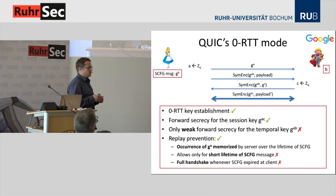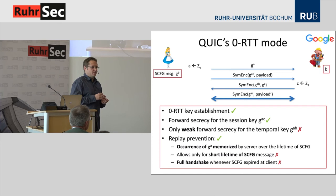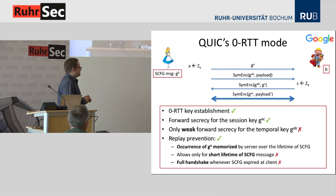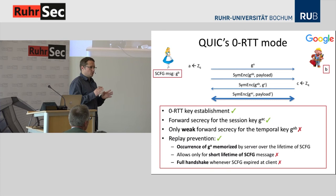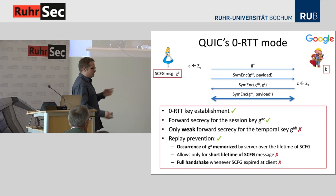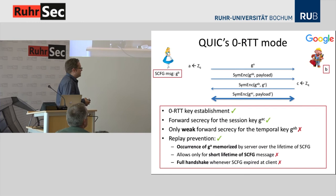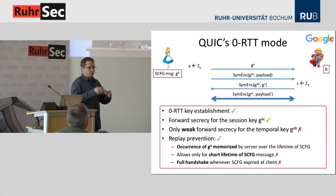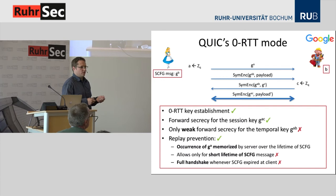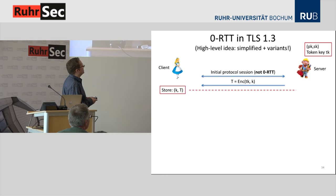QUIC also prevents replay attacks, essentially by remembering all messages it has received before. They don't store the messages themselves but use a Bloom filter, which is more or less the same thing. This is also the reason why the server configuration message must be relatively short-lived: if it's too long-lived, the server has to store too much data. Whenever the server config message expires — which happens often for high-load servers unless they want to store ridiculously large amounts of memory — another full handshake has to be performed. So this is amortized zero-round-trip-time.